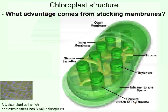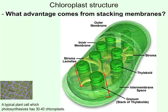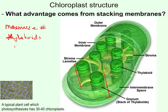Here is a bigger picture of a chloroplast. The question is: what advantage comes from stacking these thylakoid membranes? The answer is to fit as many as possible inside each chloroplast — to maximize the number of thylakoids. The thylakoid membranes are where photosynthesis happens, so the more membranes you pack in, the more photosynthesis can occur and the more efficiently the plant can convert sunlight energy into chemical energy.